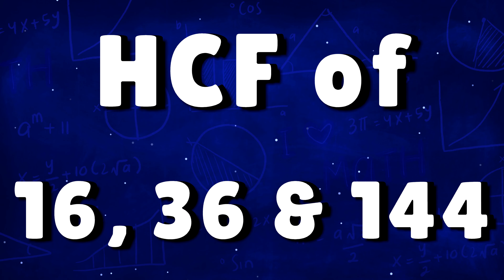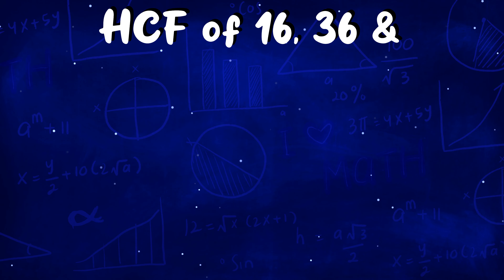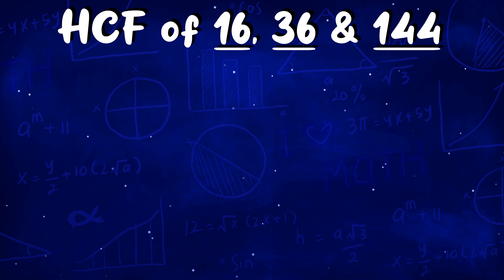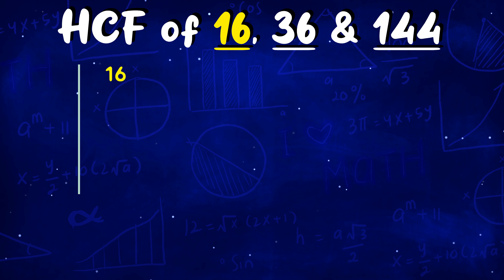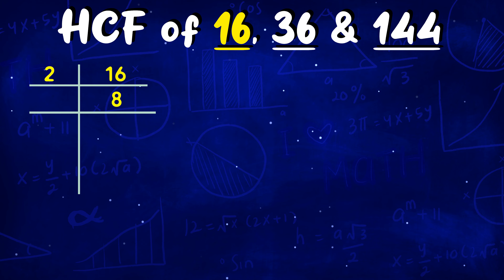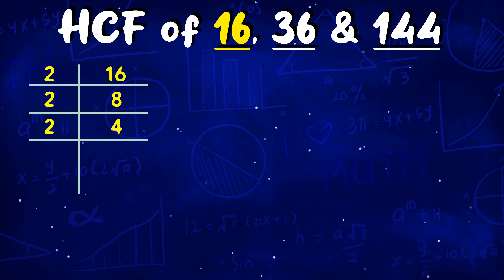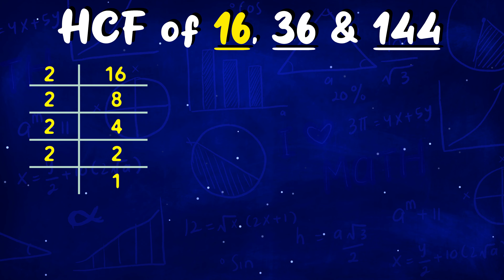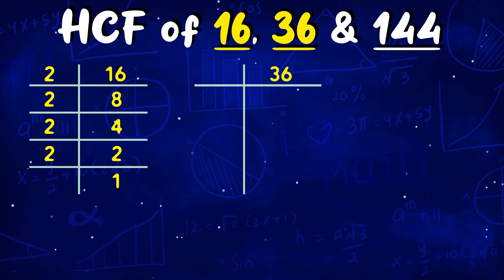Method to find HCF easily. Let's find HCF of highlighted numbers. First we will divide 16 by prime numbers until we can't divide anymore. We will do the same with the remaining numbers.